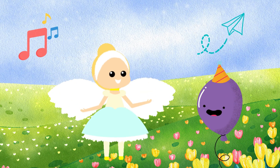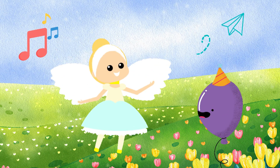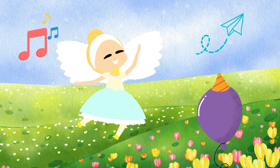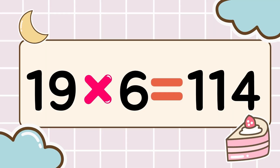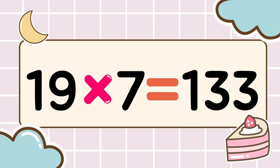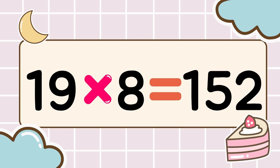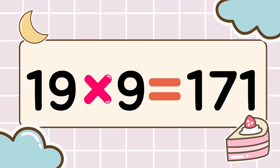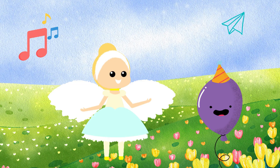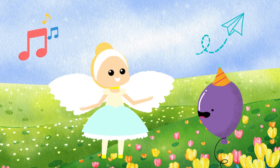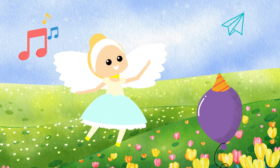You did it perfectly so far! Multiplication mode stays on! Let's go to the next level! 19 times 6 is 114, 19 times 7 is 133, 19 times 8 is 152, 19 times 9 is 171. Learning times tables is so fun! We are fun, study fun!